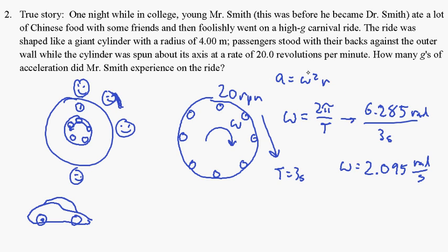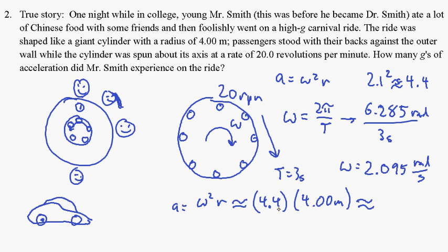Okay, so then just to find the acceleration, acceleration is omega squared times R, so 2.095 squared is going to be, let's see, 2.1 squared, I could pull out the calculator but I'm being lazy. Yeah, this counts as lazy for me. So it's going to be like 4.4-ish, give or take. So acceleration is going to be approximately 4.4 times 4.00 meters, so acceleration is going to be approximately 17.6 meters per second squared.